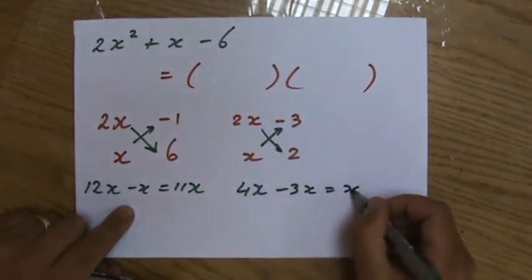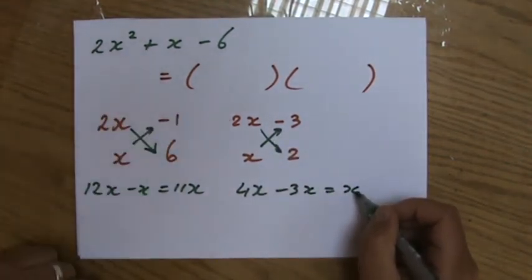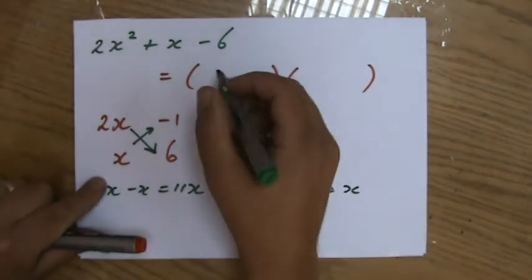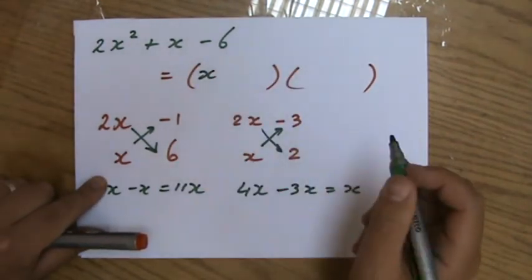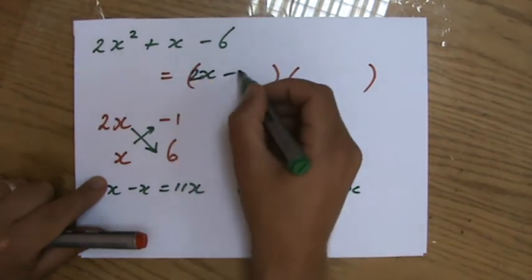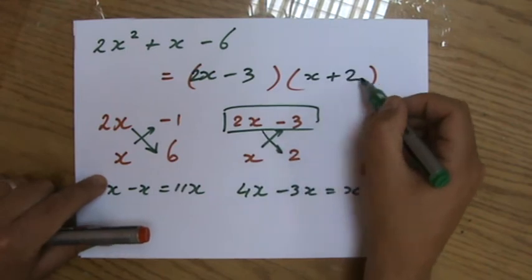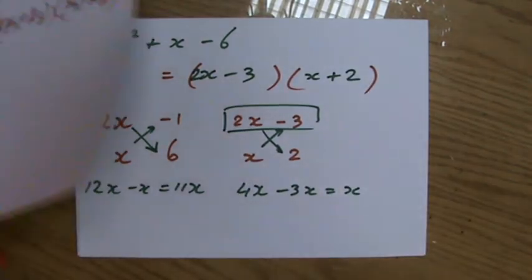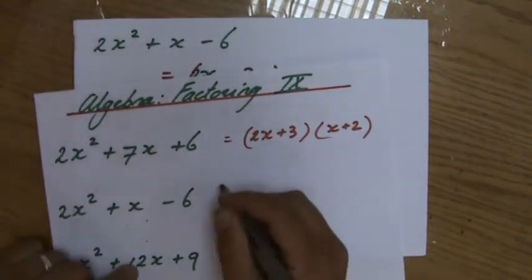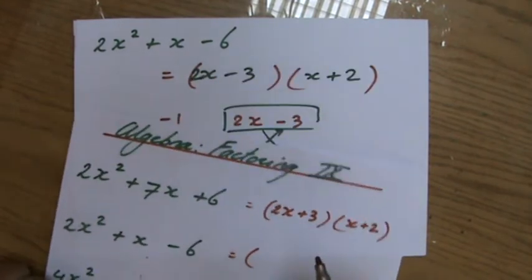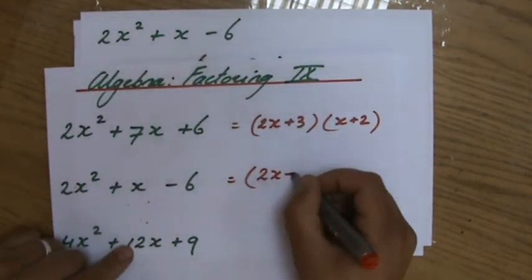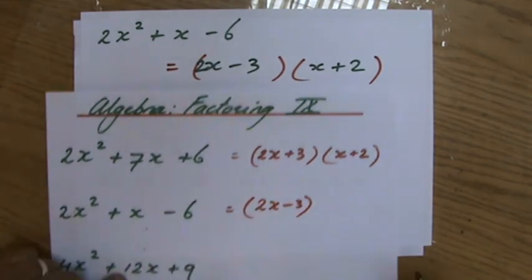So 2x times 2, so now I go diagonally, is 4x - 3x, and that is x. And that indeed is my middle term, a positive x. So what is my answer? 2x - 3, and the other one x + 2. Good, so I'm going to write that one down as well. We said 2x - 3, and the last one x + 2.